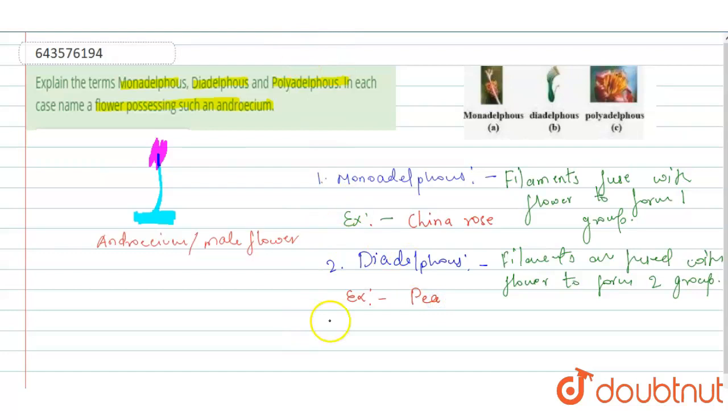Third is polyadelphous. So in this polyadelphous condition, poly means many. In this condition, filaments are fused with flower to form more than two groups.